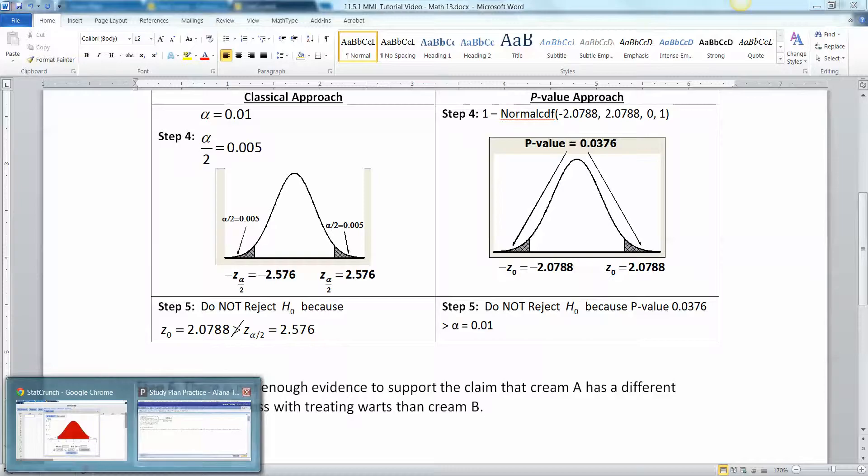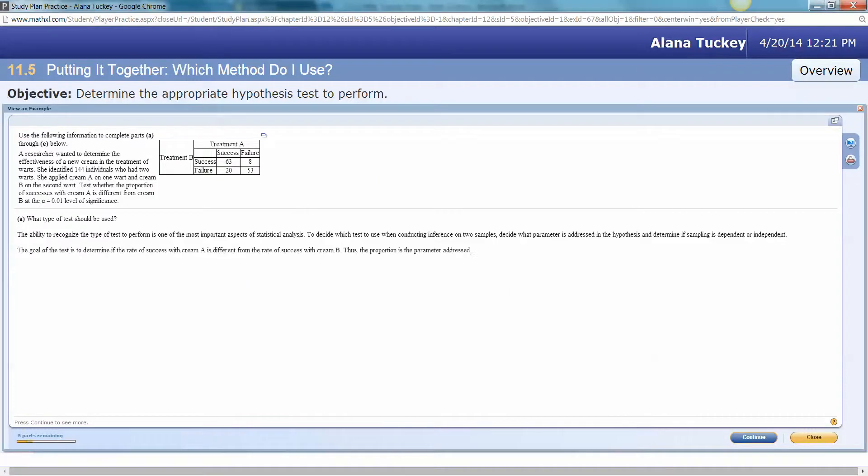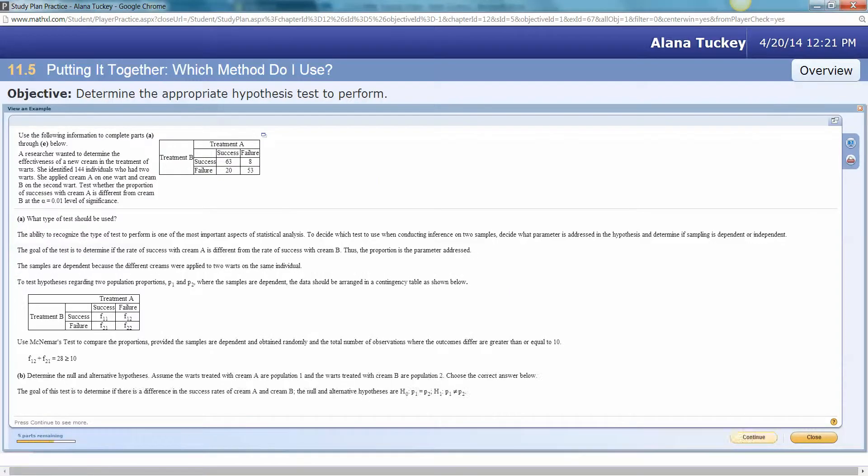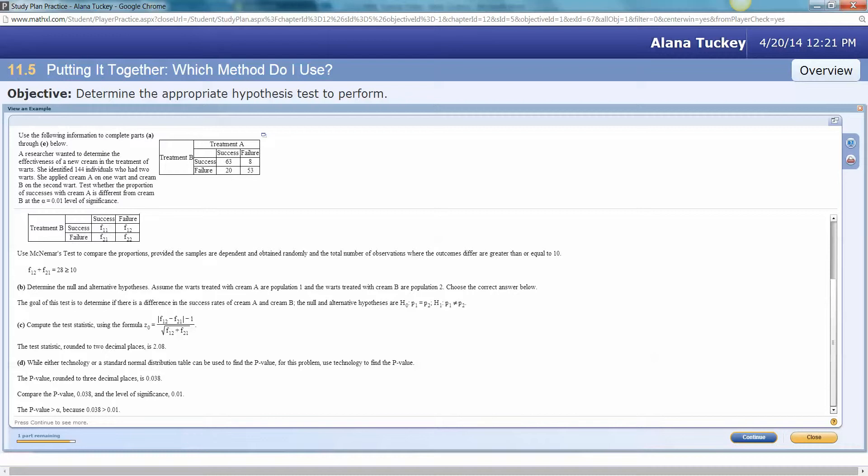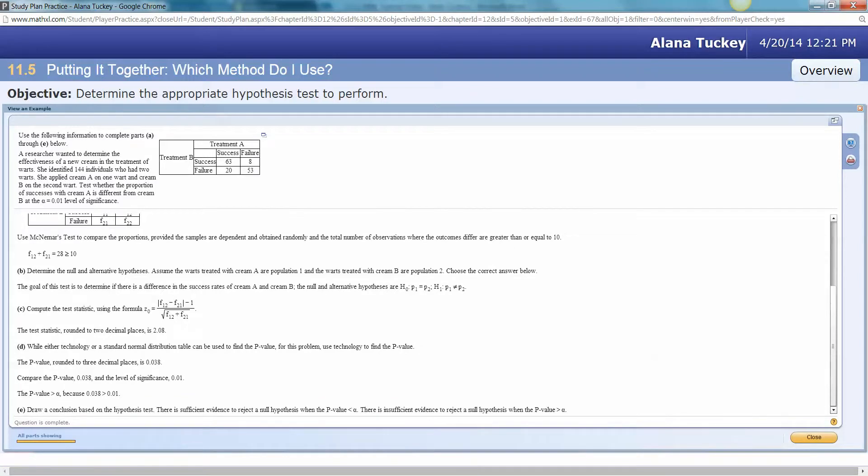All right, so let's double check that with the thing, MyMathLab. So there they have that all this work is just to get the test statistic. There's 2.08, just like we had. And then they rounded the p-value to 0.038. That's fine. We said 376, which would round. And since that's greater than 0.01, we do not reject. So it's looking good. And then we wrote a conclusion. All right, so everything's set. I hope that helps with that problem. I'll see you back here for more videos.